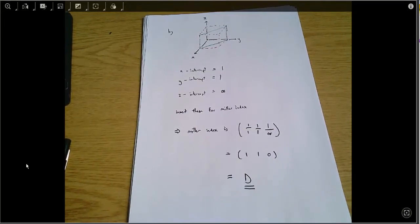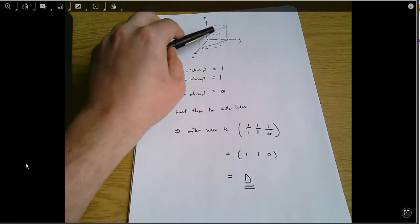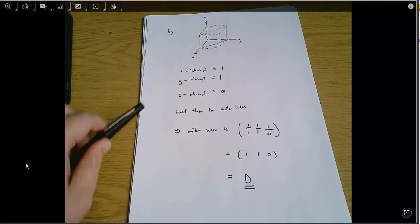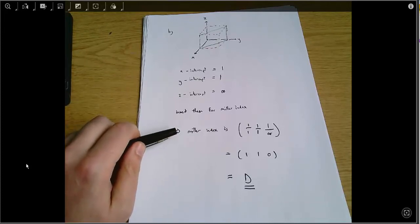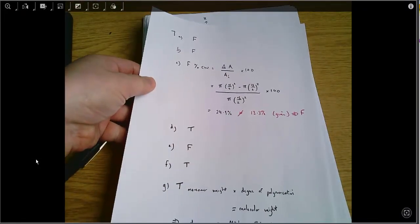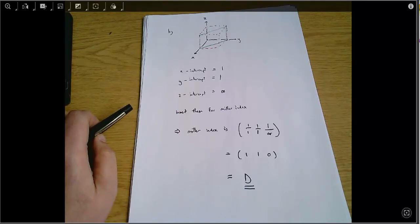So if you are answering a Miller index question in the exam, I would recommend taking a bit of time about it: drawing out the unit cube, writing down what your x, y, and z intercepts are, and then finally inverting those to get your Miller index. And do remember that negative numbers in Miller indices are expressed with a bar over the top of the number. So that is question seven. There were seven marks for the true or false questions here, and there were three marks for getting the correct Miller index.